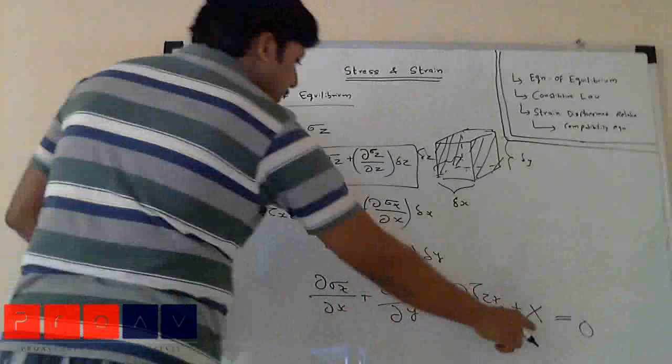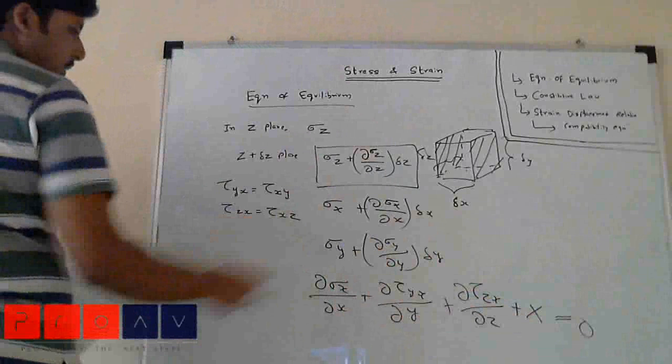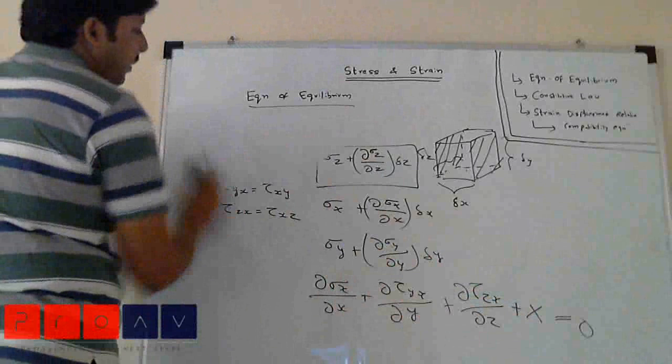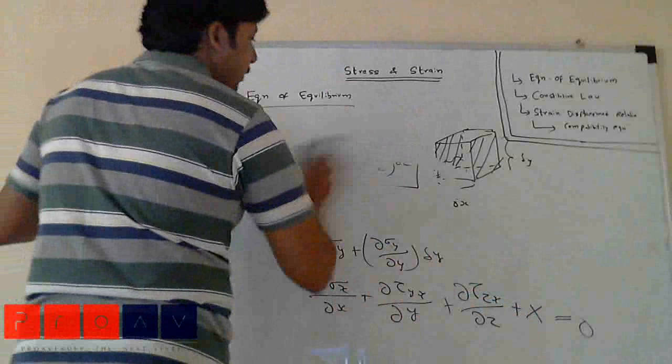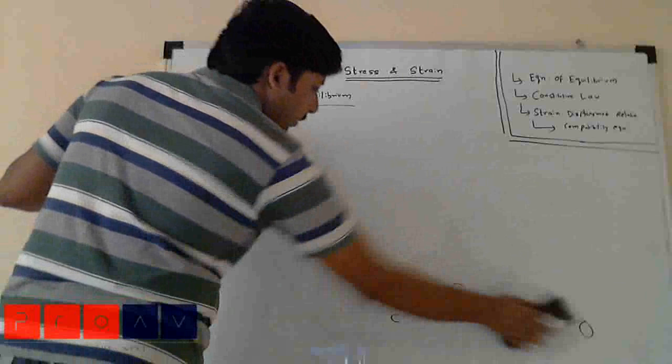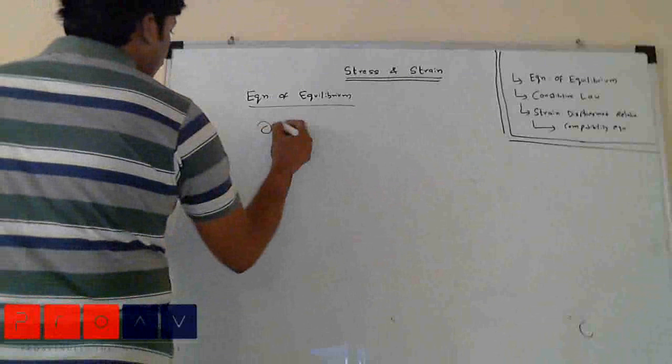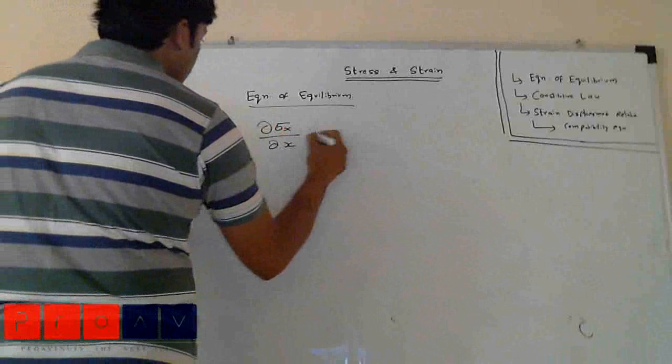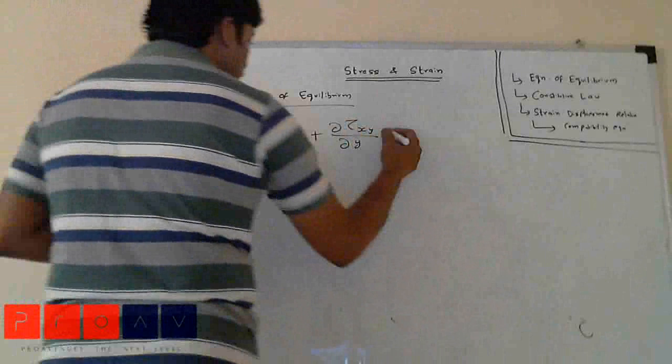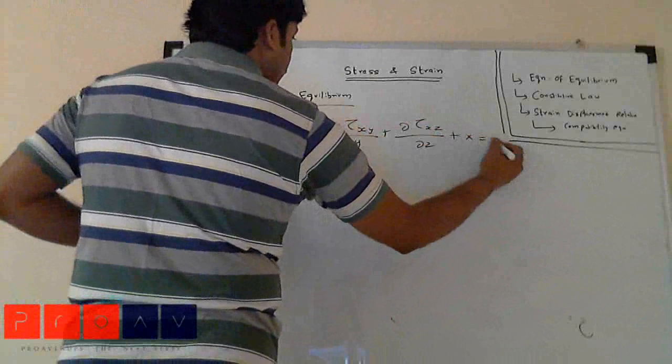This is the body force. Similarly we will be getting two more equations for y and z directions. Now using this simplification, the final equations can be written as: d sigma x by dx - previously it was yx, now it is xy - plus d tau xy by dy plus d tau xz by dz plus X equals zero.